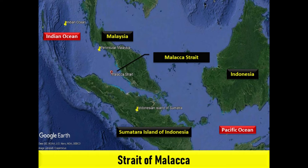The Strait of Malacca is a narrow stretch of water between the Malay Peninsula, Peninsula Malaysia, and the Indonesian island of Sumatra. As the main shipping channel between the Indian Ocean and the Pacific Ocean, it is one of the most important shipping lanes in the world. It is named after the Malacca Sultanate that ruled over the archipelago between 1400 and 1511, the centre of administration of which was located in the modern-day state of Malacca, Malaysia.